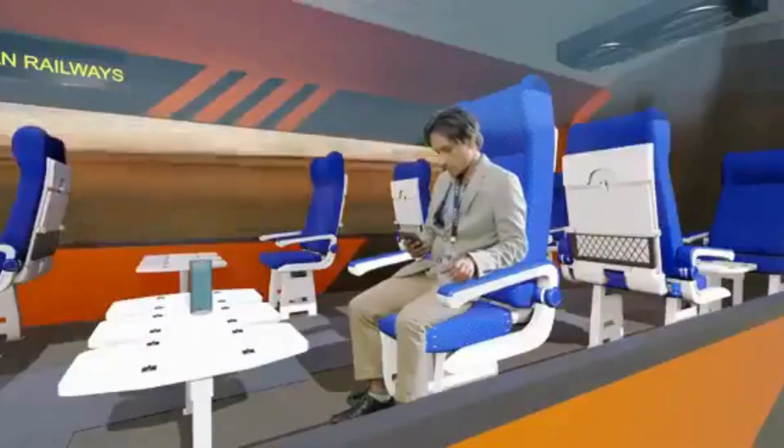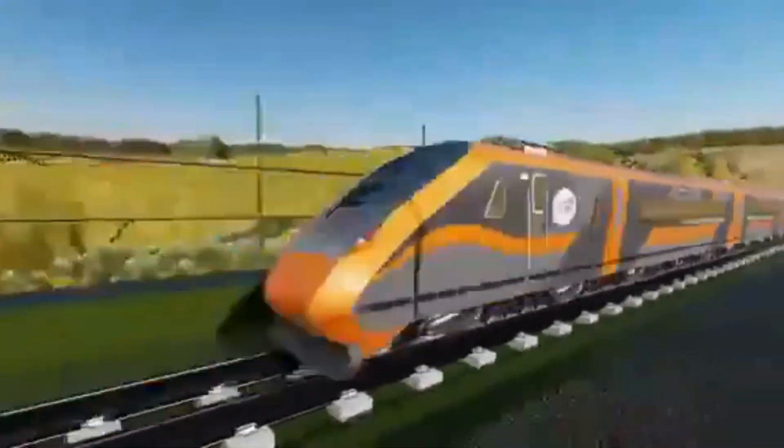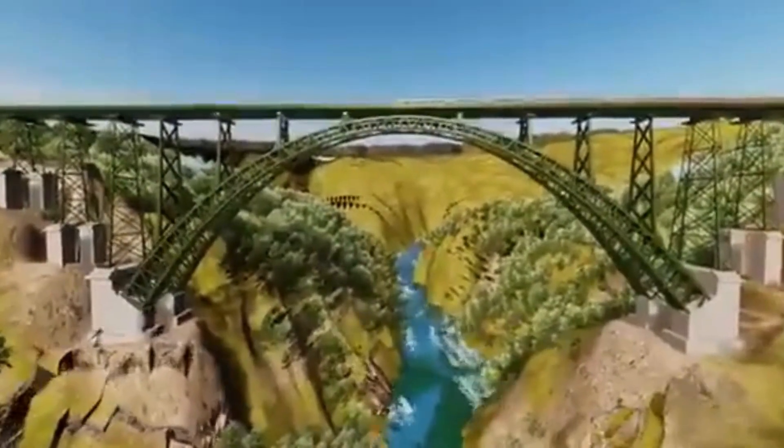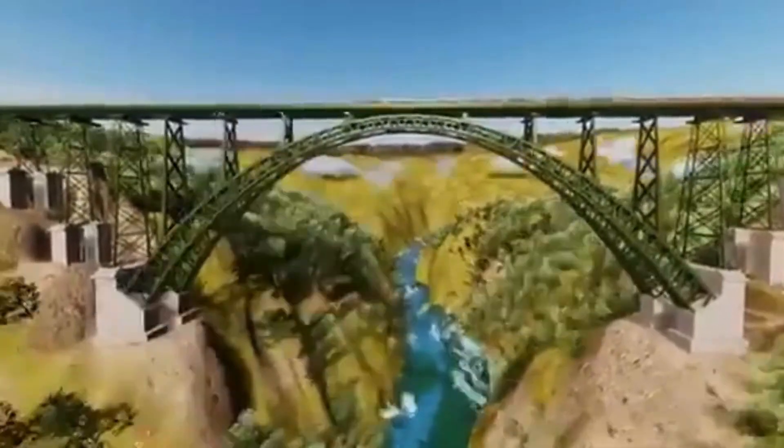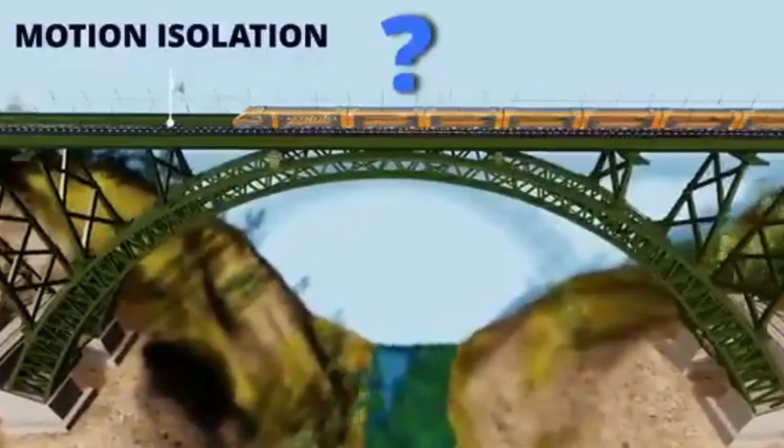The Chenab Bridge has been hit by an earthquake with a magnitude of 8.0 on the Richter scale. Passengers might think disaster would soon happen. What actually happens is different. The rail deck remains unaffected by the earthquake. Can you explain how this is possible?